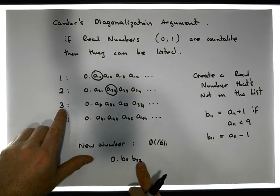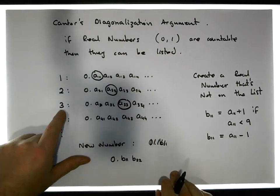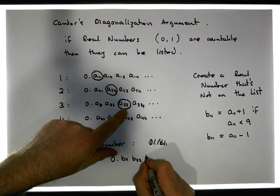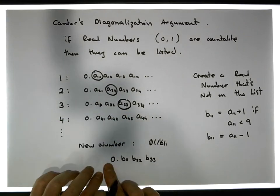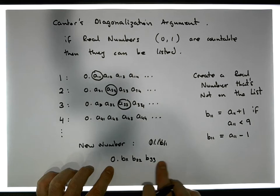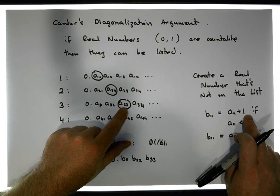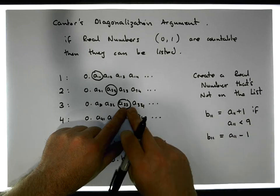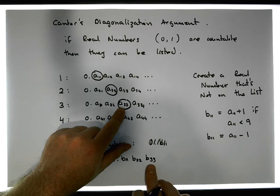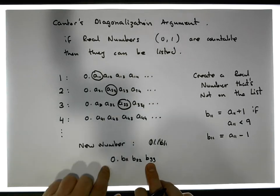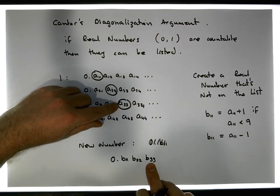Then what I'm going to do is look at the third real number that we've listed, and I'm going to take its third digit and create a new digit called B33. Once again, this new digit is going to be A33 plus one if A33 is currently less than nine, otherwise it's going to be A33 minus one. So no matter what happens, the third digit of this new real number is going to be different — either one greater or one less.